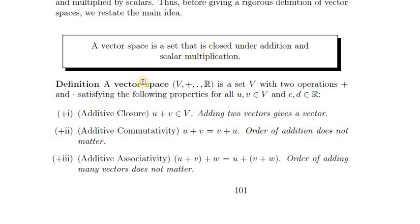We define a vector space basically as a set with two operations — addition and scalar multiplication — satisfying the following properties for all vectors u and v and for all scalars c and d. Going through this list, you have closure, commutativity, associativity — these are properties of real numbers as well.